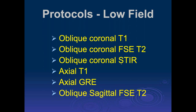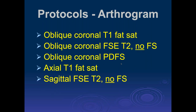We do an oblique sagittal fast spin echo T2. The fluid sensitive image really for edema is the STIR sequence in the coronal plane, but due to limitations in spatial resolution with STIR, we only do it in one plane. With arthrography, we put in dilute gadolinium contrast and do a fat sat T1 in the coronal plane, then the rest of the sequences are similar — axial T1 fat sat and axial PD fat sat to get another look at edema within the bones.